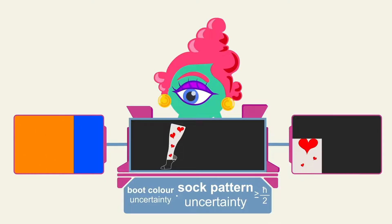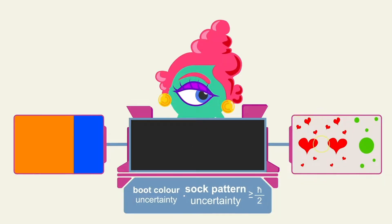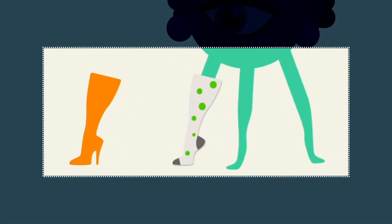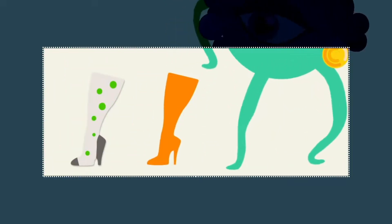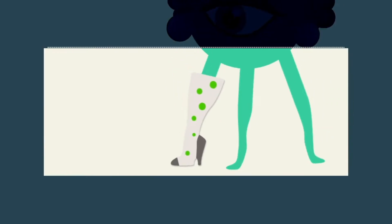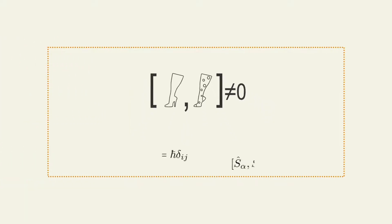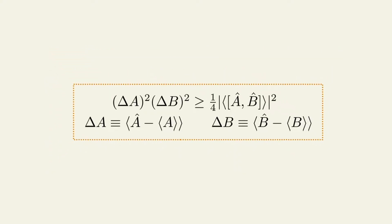it might happen that two sock patterns are the same, and therefore we can have an insight into Werner's socks preference. By knowing a little less about the boot's colour, we get a peek at the sock. The two actions — wear a sock and wear a boot — are incompatible, which means that if performed in a different order, the end result is different. In mathematical terms, their commutator is not zero. This applies to several physical quantities. These commutators give rise to the uncertainty principle.